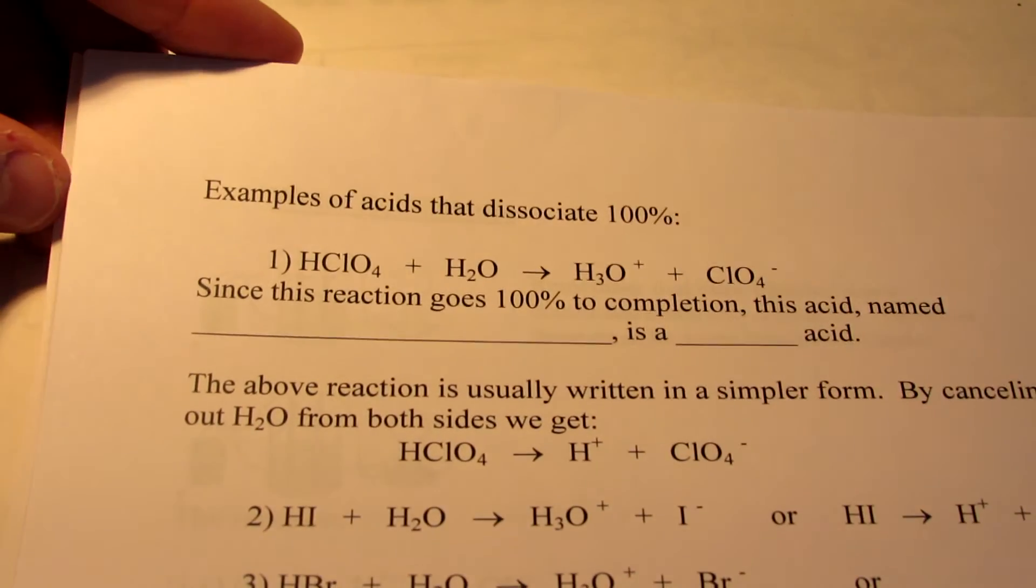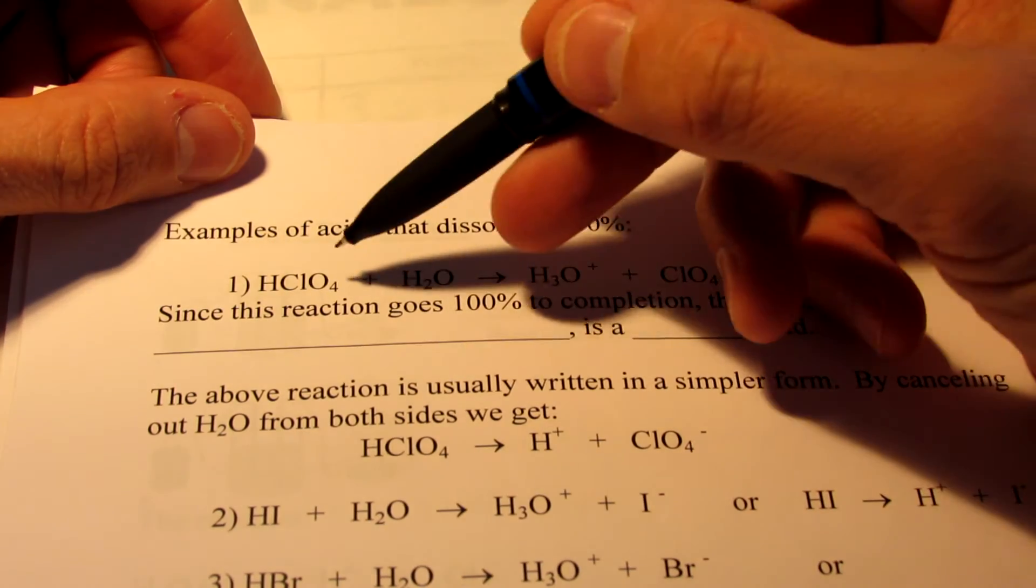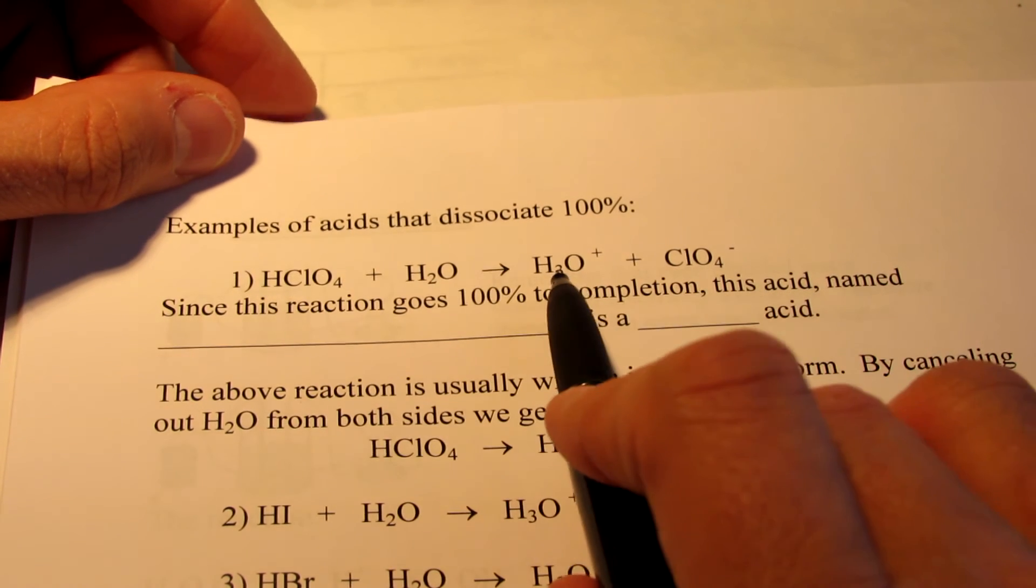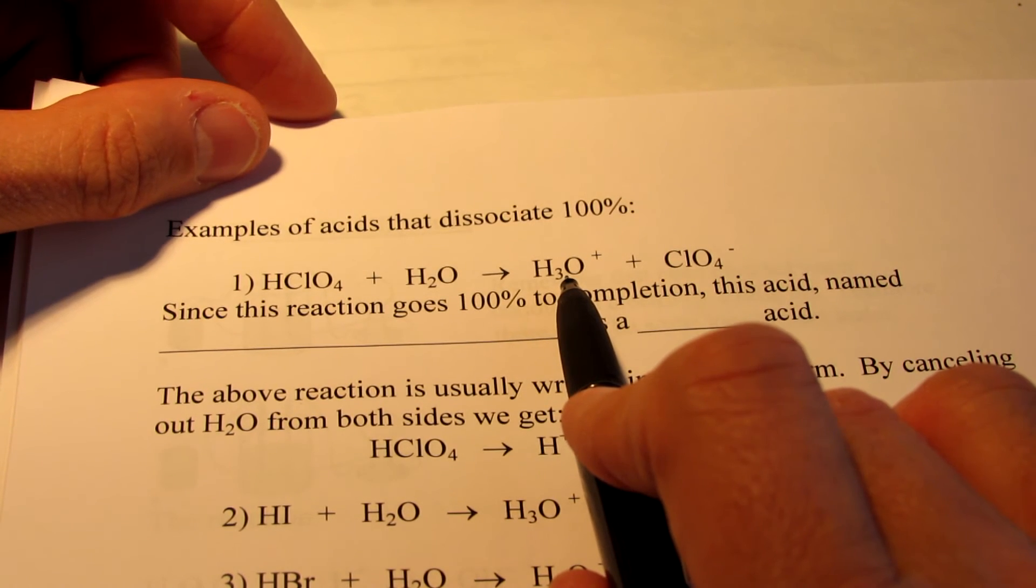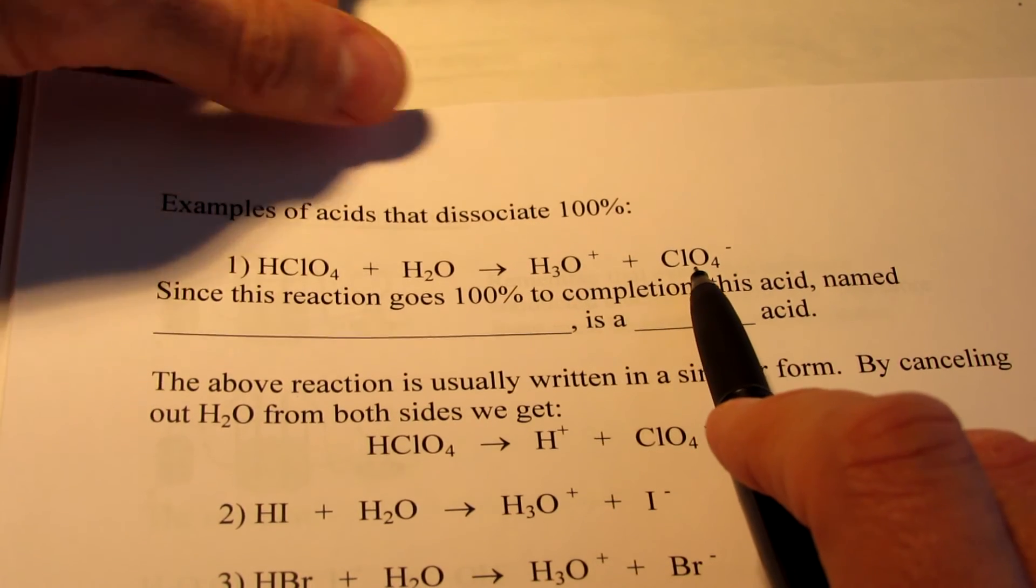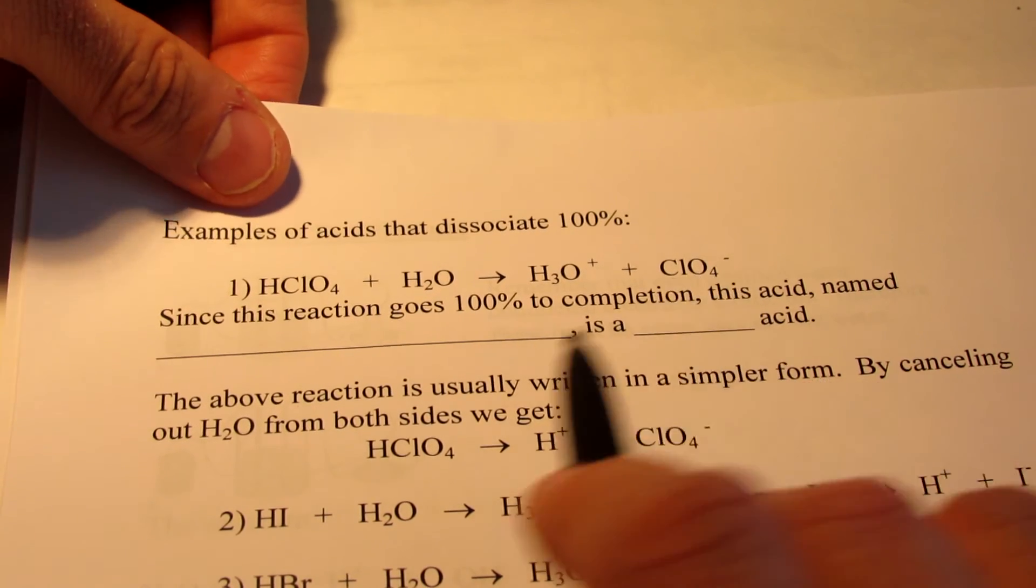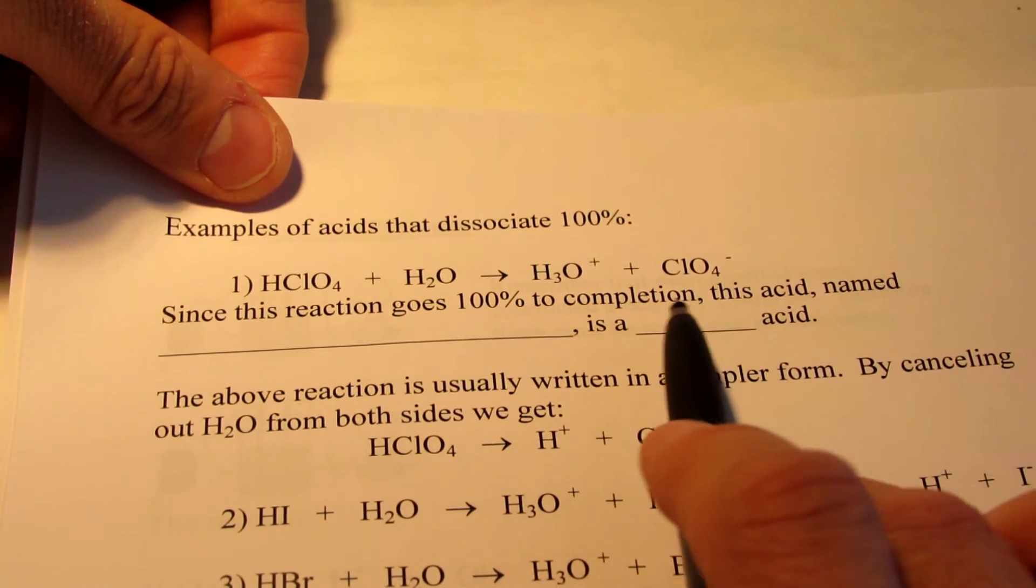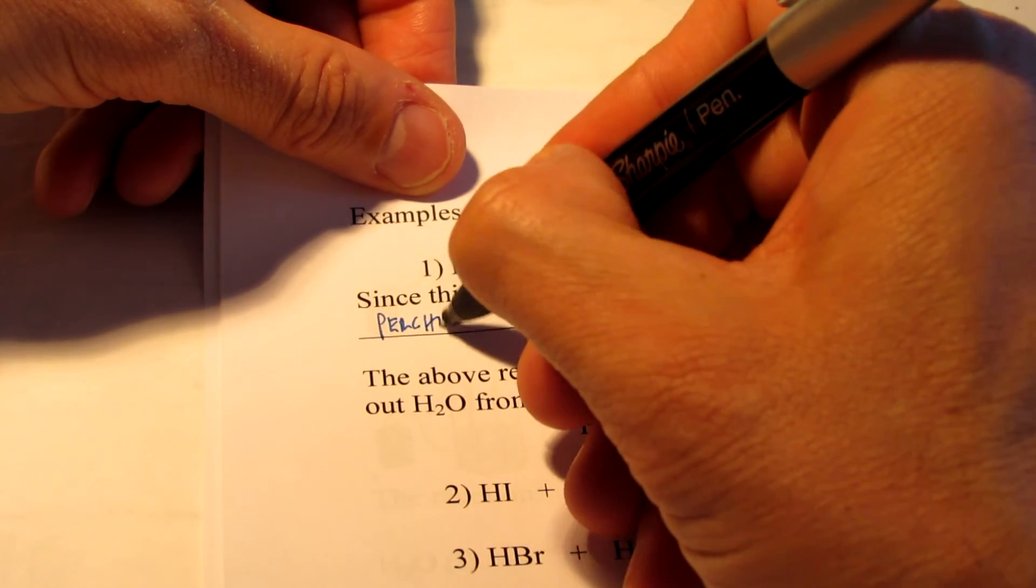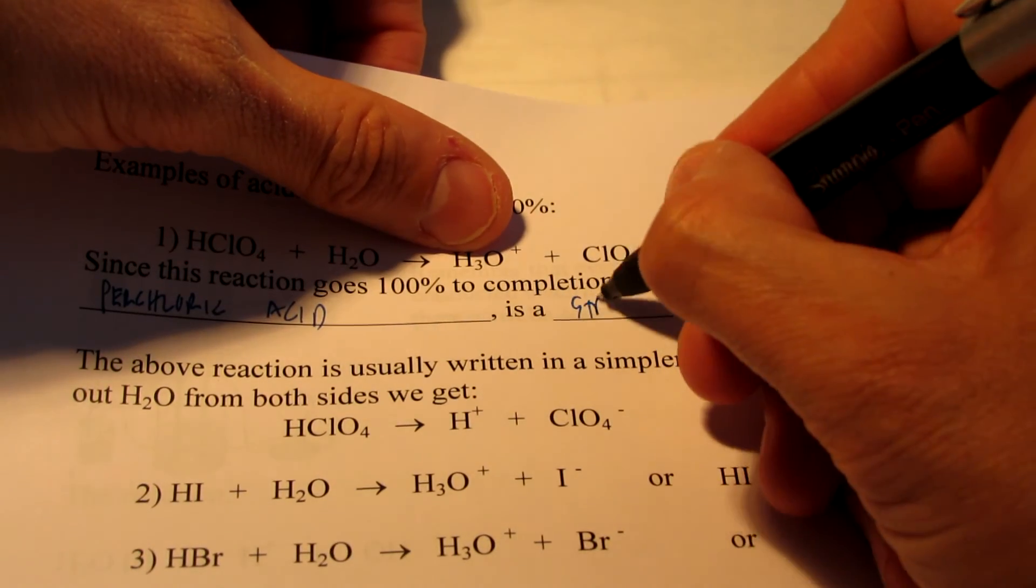Let me give you a list of acids that do this 100% of the time. The first acid, HClO4, is called perchloric acid. When I add this to water, the water will take away that proton 100% of the time and become H3O+. What do I have left? My HClO4 lost a proton so I have perchlorate ions, ClO4 negative, without the proton any longer. Since this reaction goes 100% to completion, this acid is called perchloric acid and it is a strong acid.